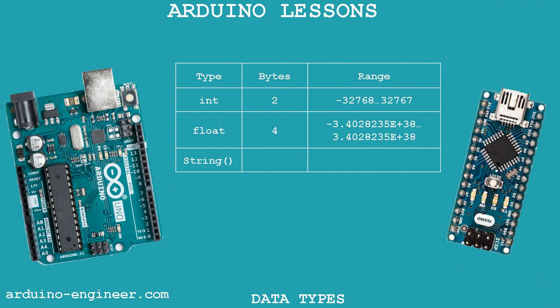Without integer, we will not do almost anywhere. For precise calculations and representations of physical quantities, a floating-point type is required. A text string is needed for convenient display of characters on LCD indicators and the board monitor. For those of you who find this information difficult, review the lesson several times. Thanks for your attention – I wish you all success and see you soon.